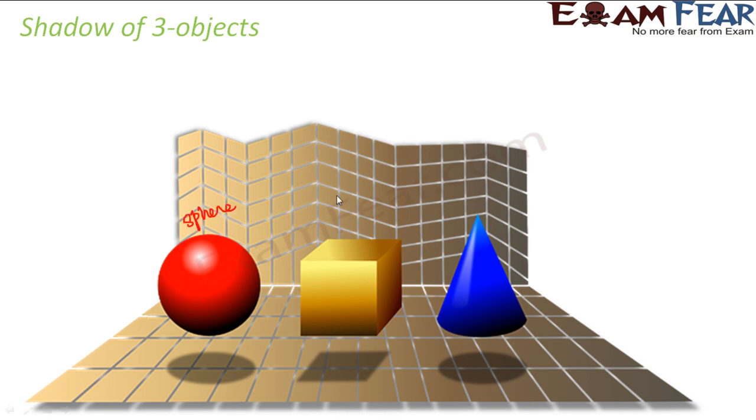The second one is a cube and the third one is a cone. We all know that all of these - sphere, cube and cone - they are all three-dimensional shapes.